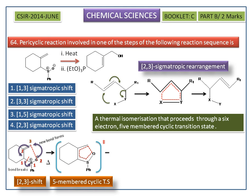Once the transition state is formed, we get the product. In the presence of a Lewis base, the bond between sulfur and oxygen is cleaved. Finally, it yields cyclohexenyl methanol.